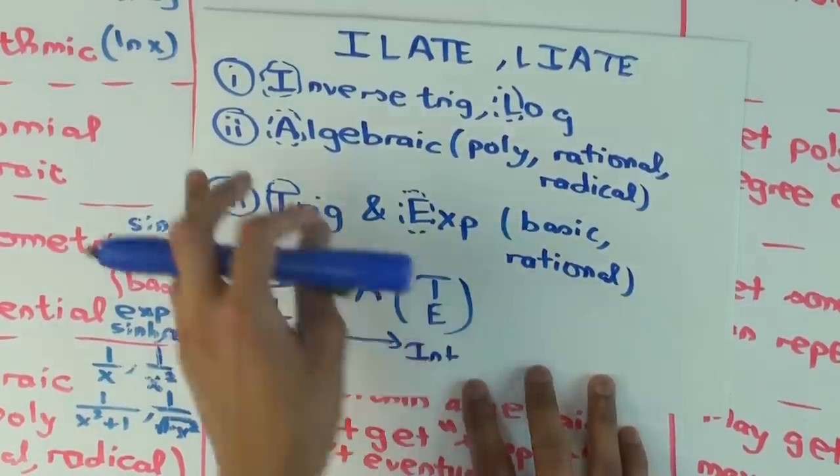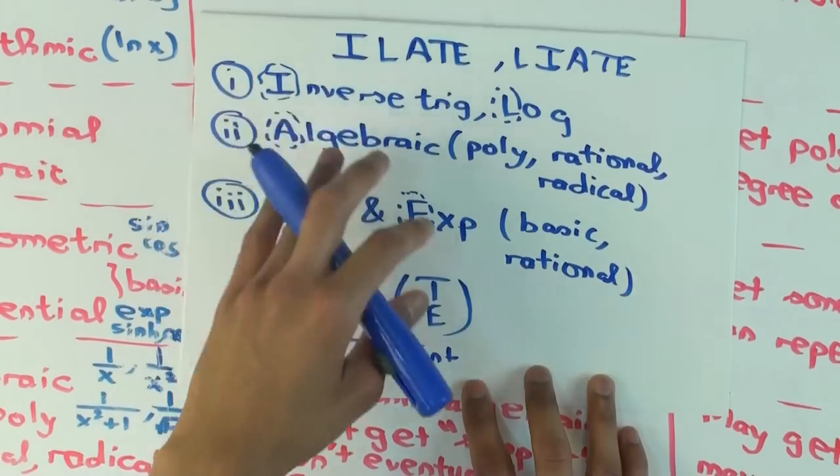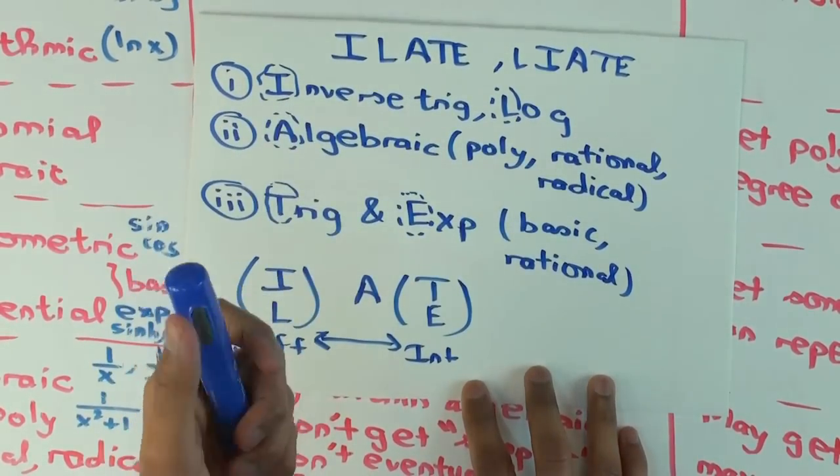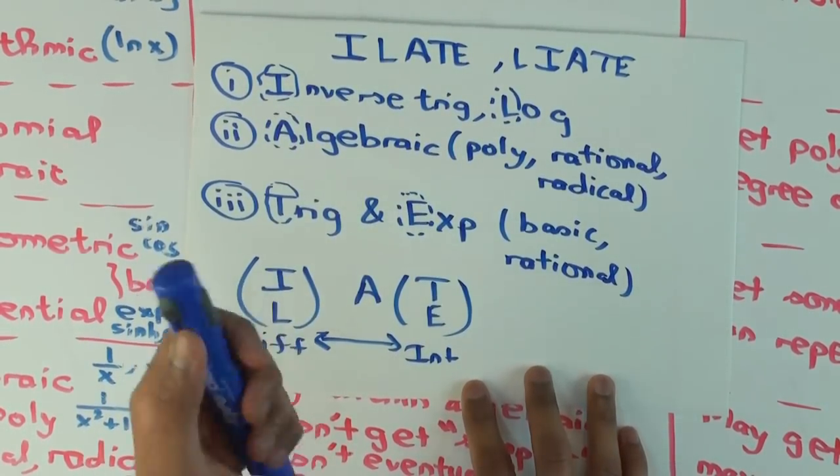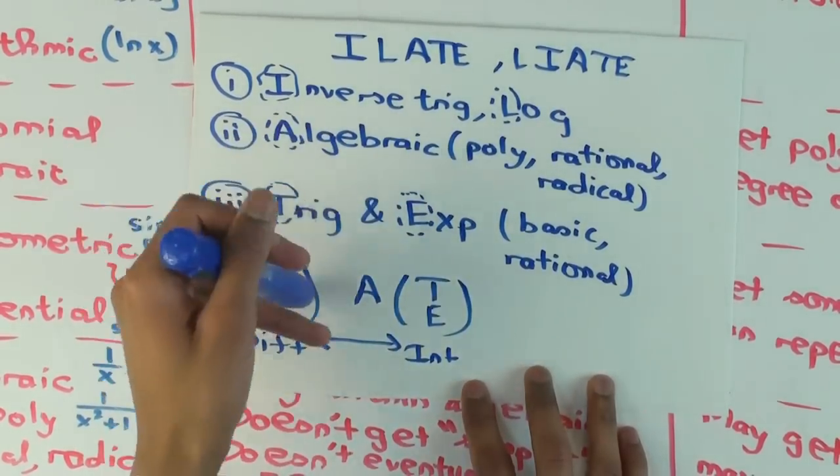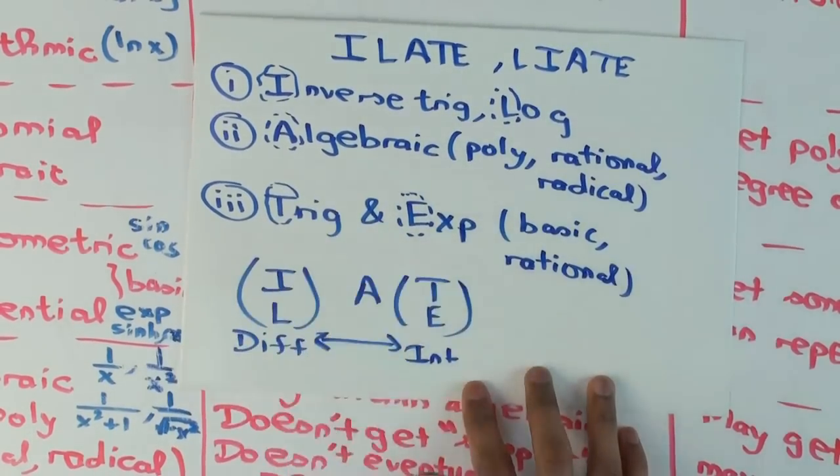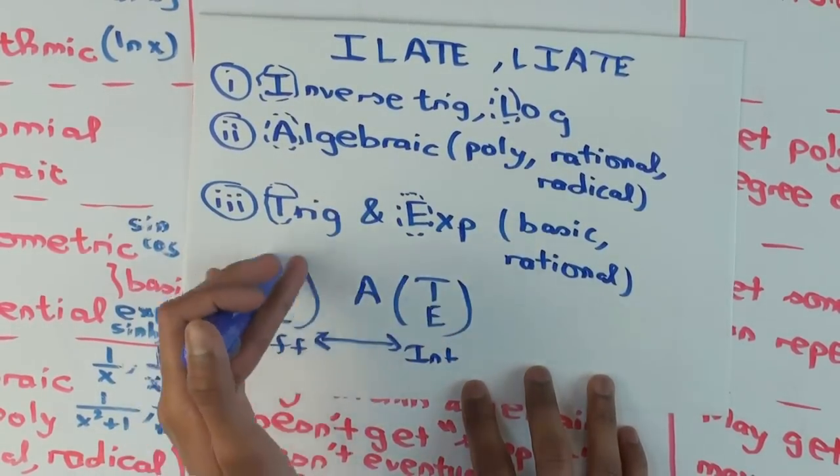Okay, so if you have a product which involves something here and something here, you can use this to figure out which to differentiate, which to integrate. If integration by parts works, then it will usually work based on this rule. So if you follow this rule and the problem is meant to be solved by integration by parts, it will usually work.